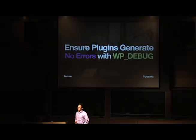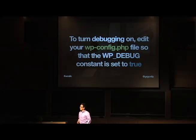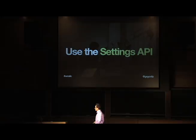Ensure plugins generate no errors with WP_DEBUG. The best way is to go to your wp-config.php file, find where it says WP_DEBUG, and set the constant to true. This will report what errors you have with your plugin or theme.